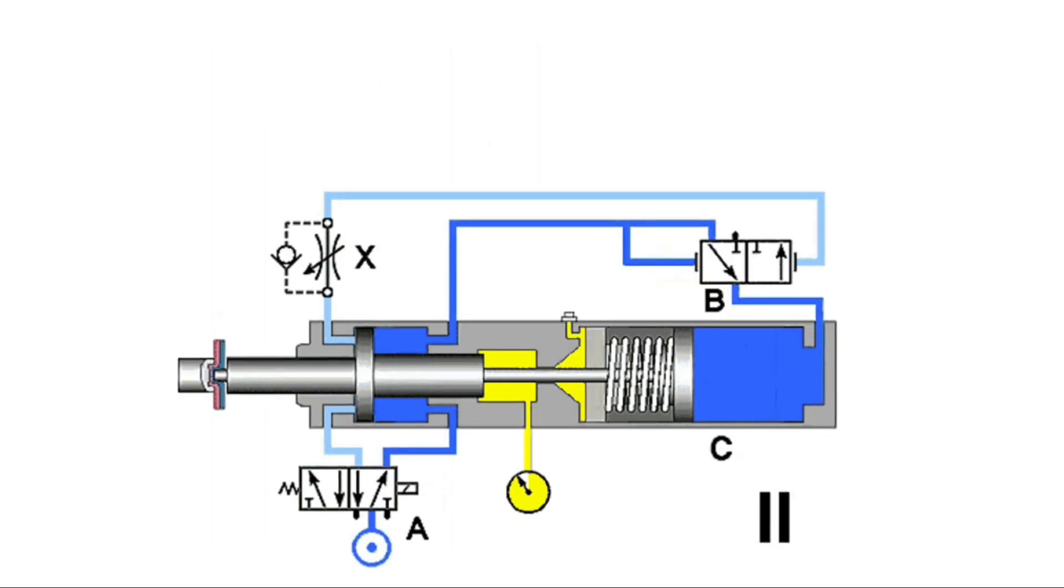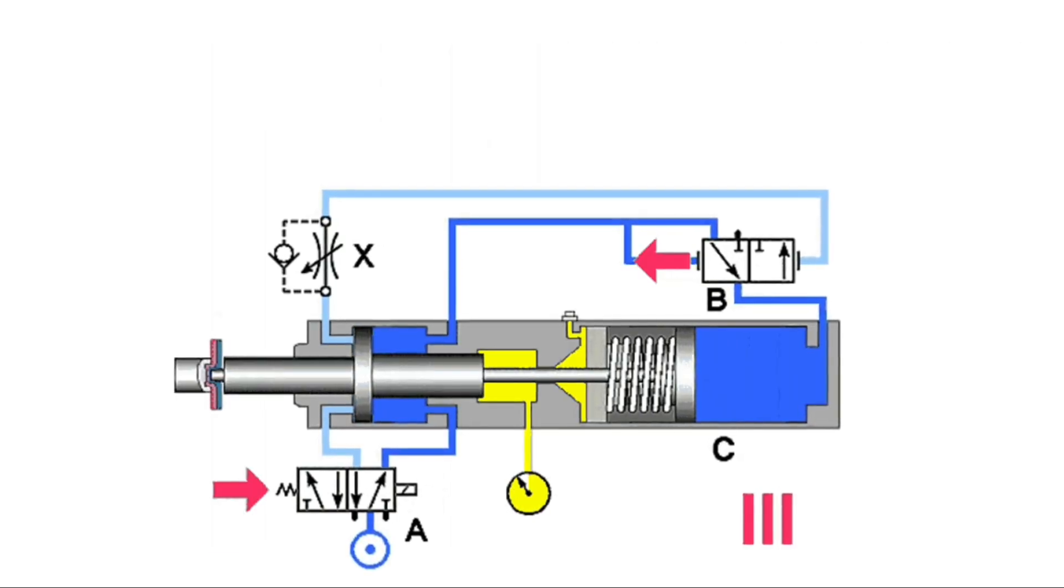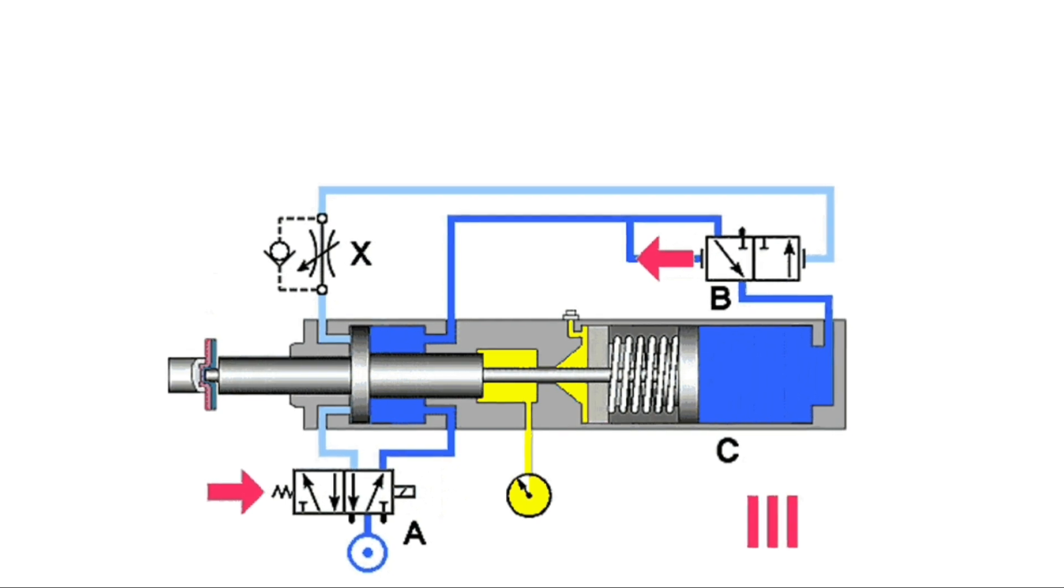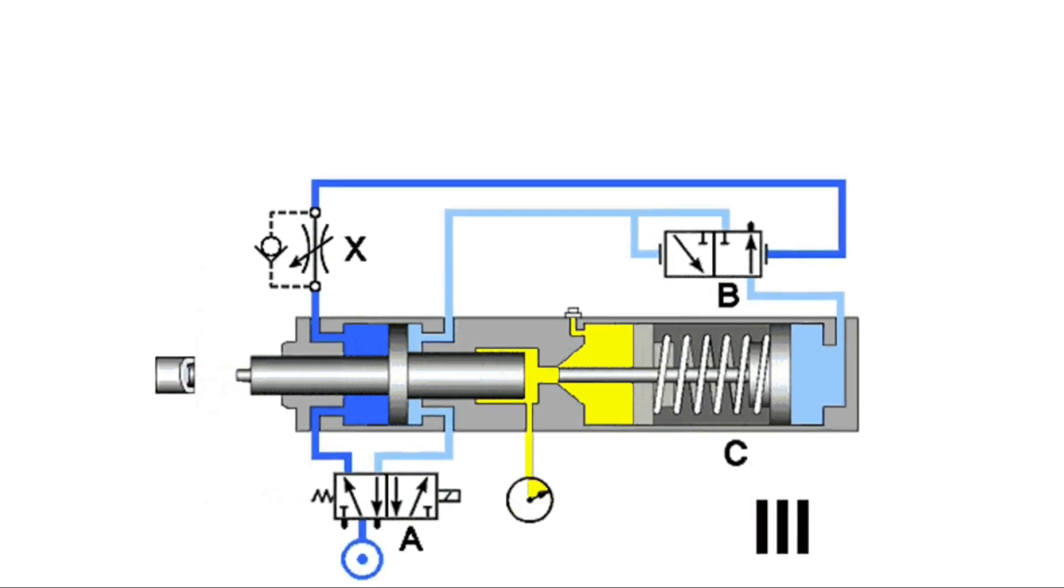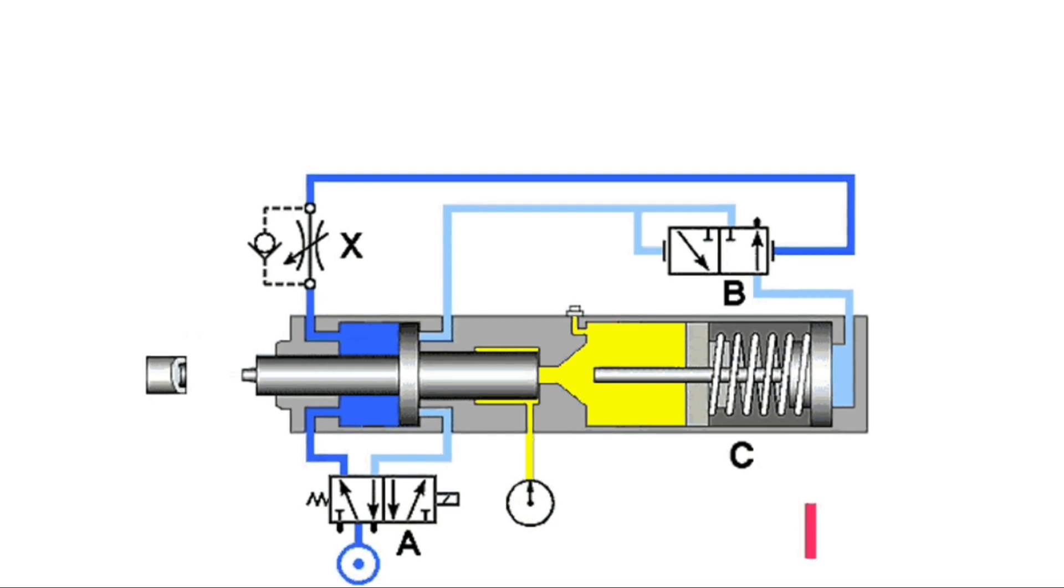Spring diaphragm. The spring diaphragm pneumatic actuator is probably the most common actuator used to operate industrial process control valves. So, let's have a closer look.